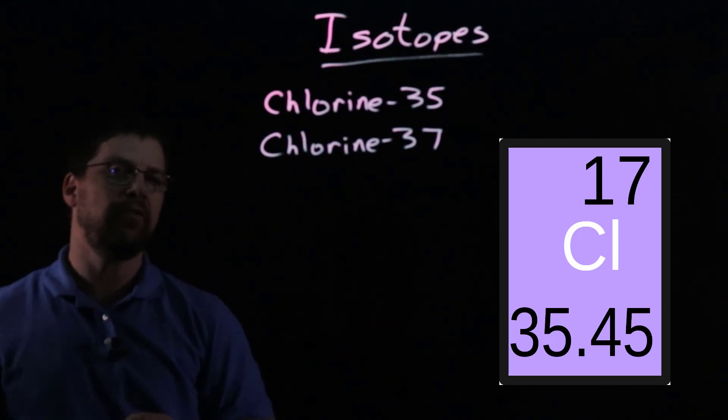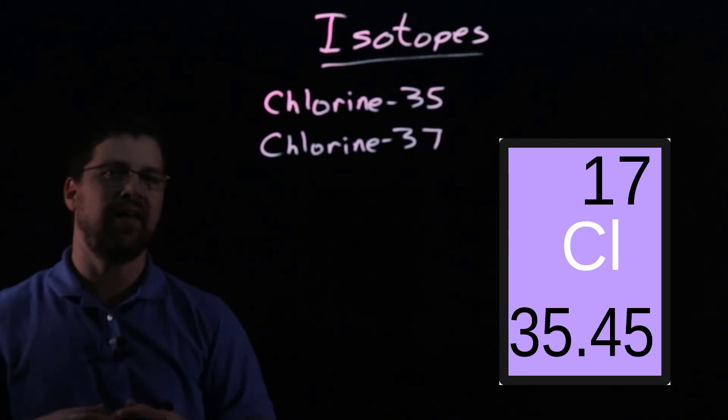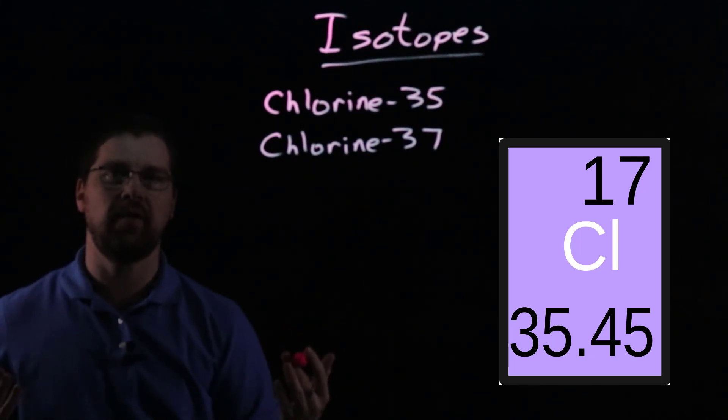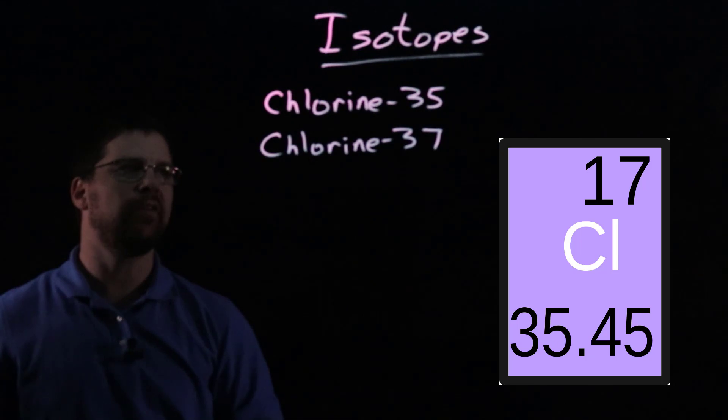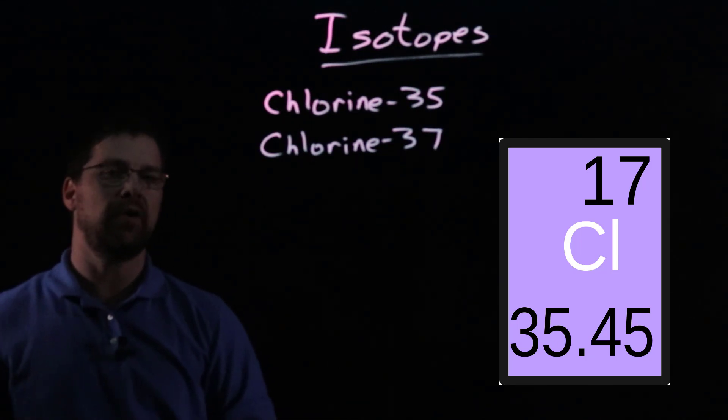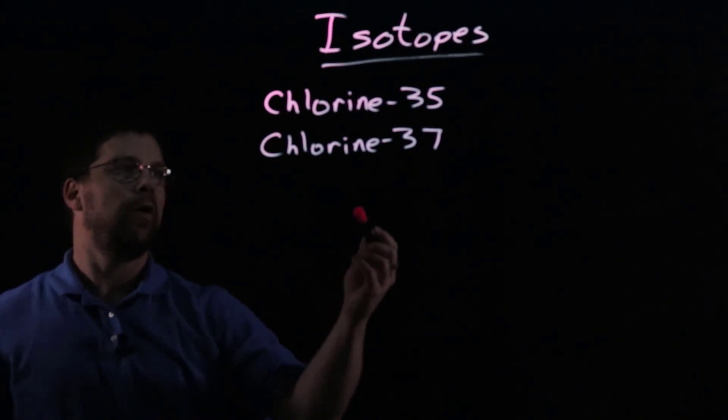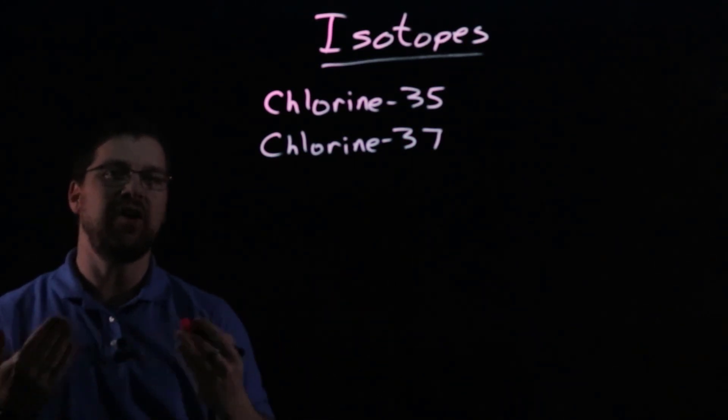And so we might be tempted to think, well, if there's two different types of chlorine, then to get the average mass of all chlorines, we just add 35 and 37, divide by two. Take the mean average, which will give us 36. But that's not what we see on the periodic table.